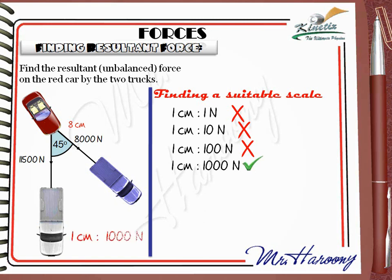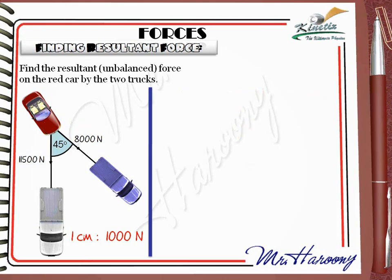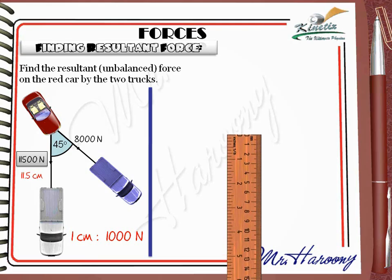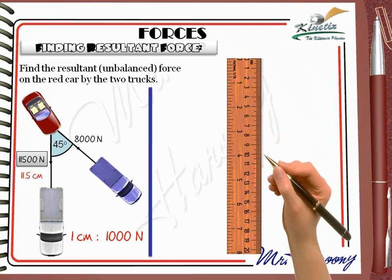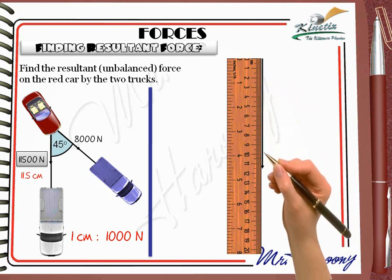Our chosen scale is 1 cm to 1000 N. We need a reference to start our force diagram from. It will be easier to take the vertical 11,500 N as our starting force. According to our scale, this is represented by an arrow that is 11.5 cm. Get the ruler and, using your sharp pencil, draw a vertical arrow that is 11.5 cm long.